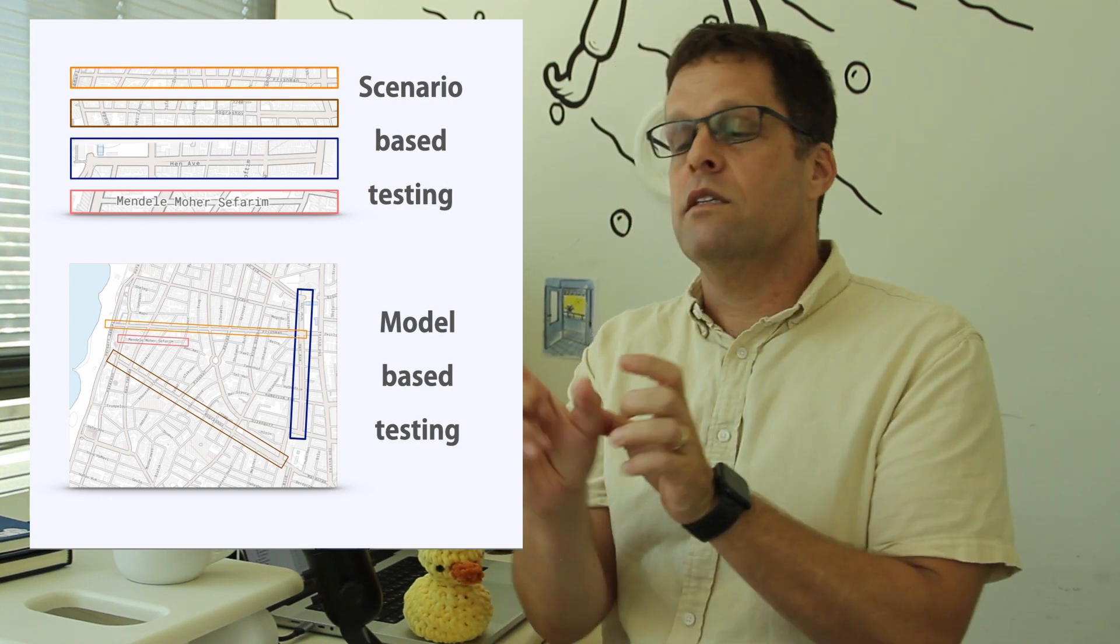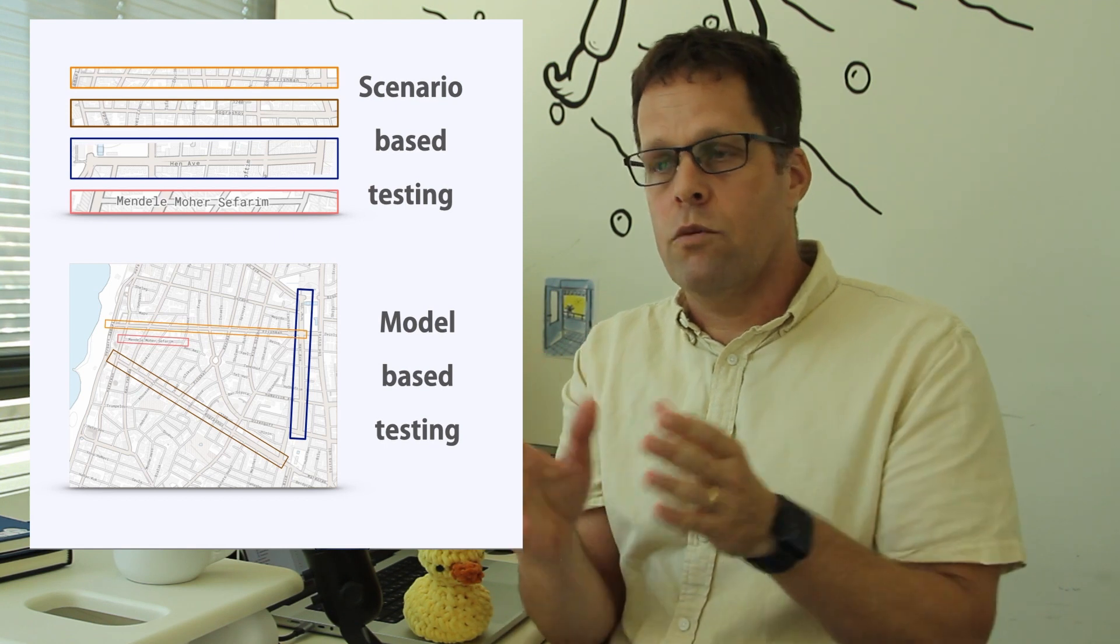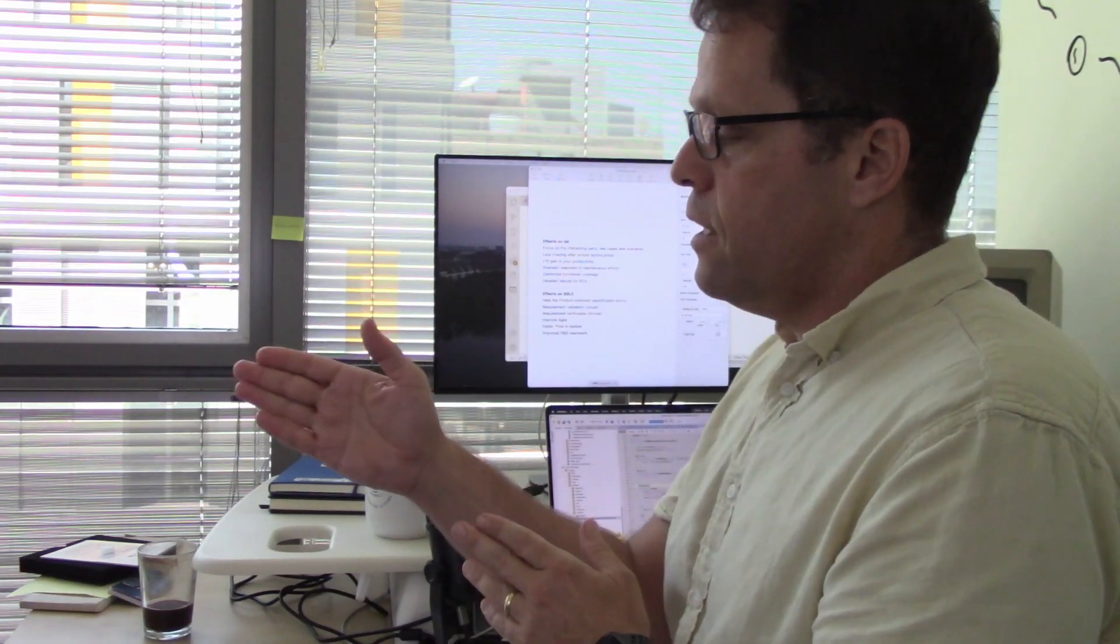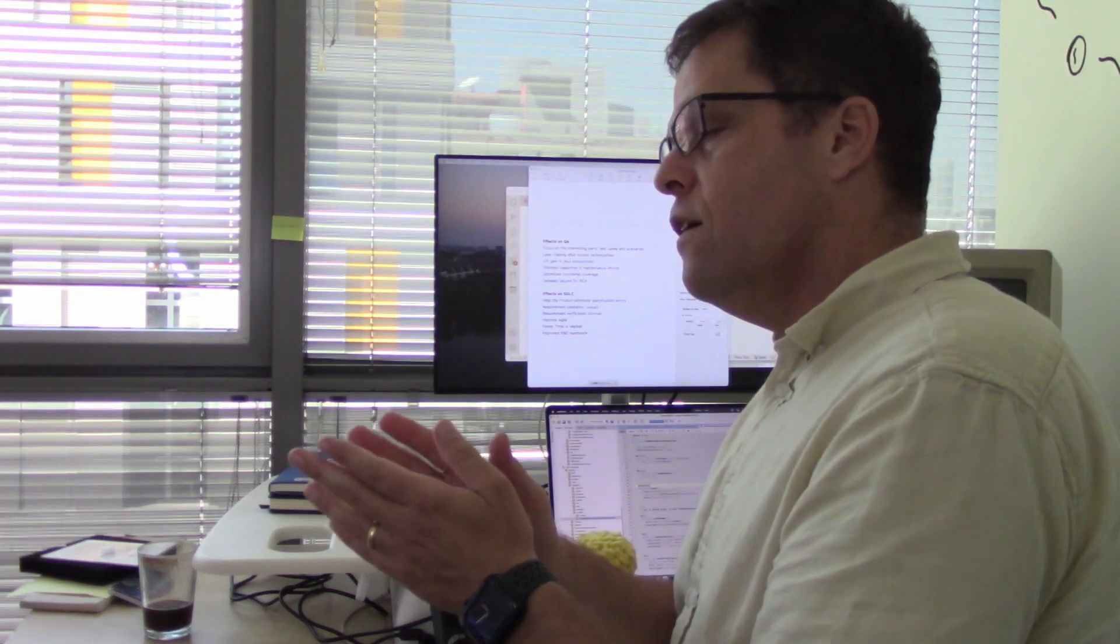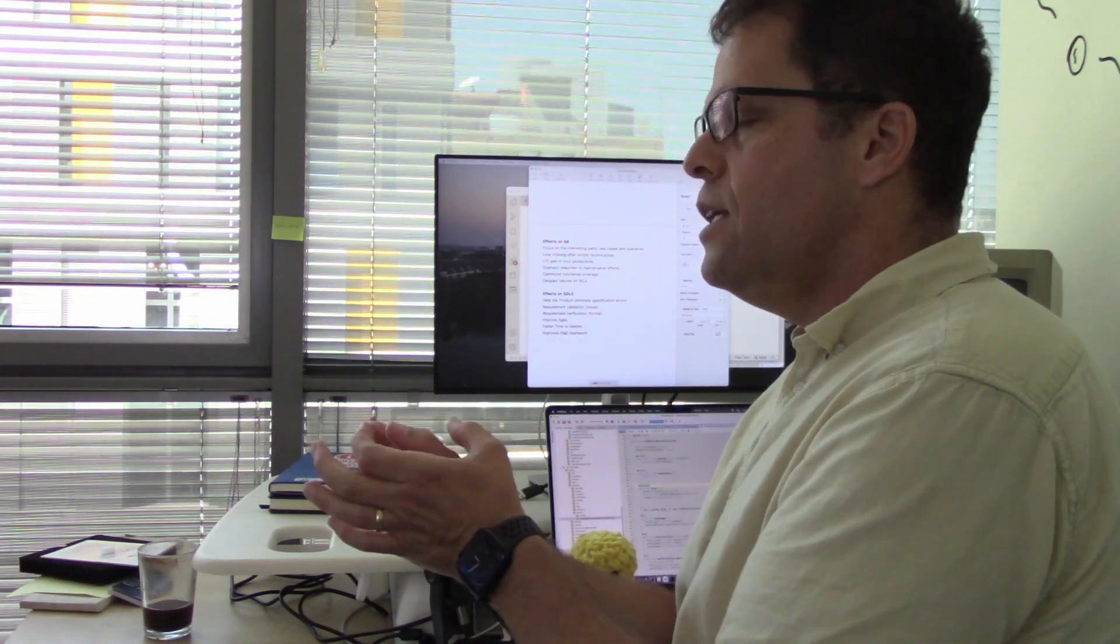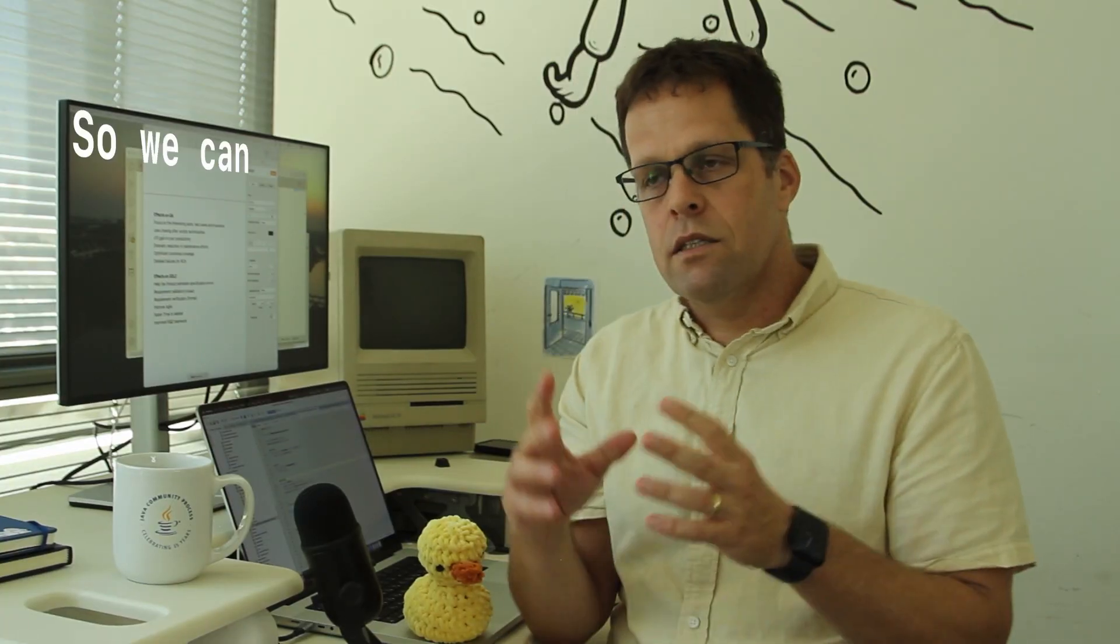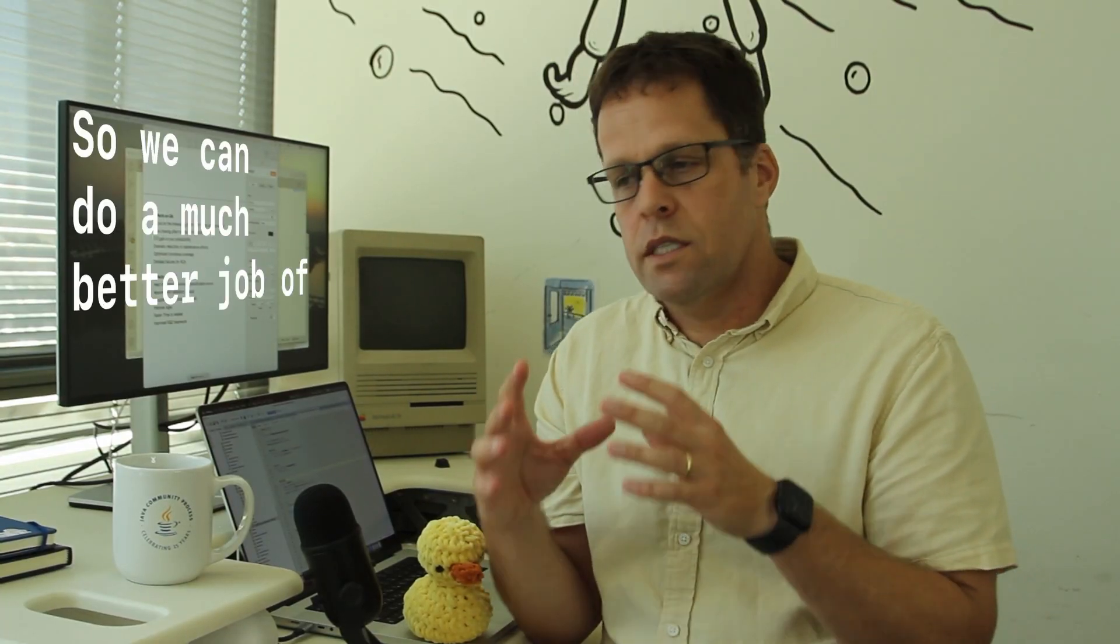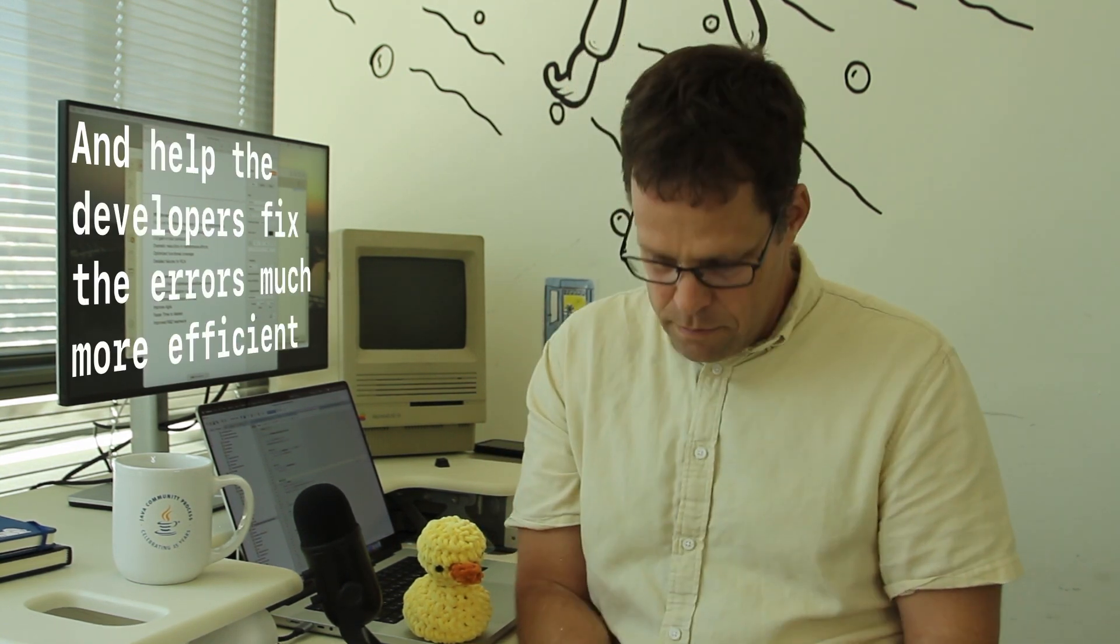But in model-based testing, you have the map. So, you know that these tests, actually they have two tests that check the same thing or maybe they converge on something. Or if a single test doesn't work, we can do all kinds of tests that are adjacent to it or are similar to it. And this way we can tease out all these root causes. So we can do a much better work in reporting bugs and we can help the developers fix the errors much more efficiently.